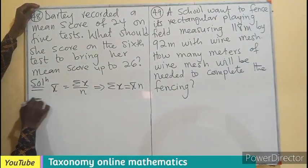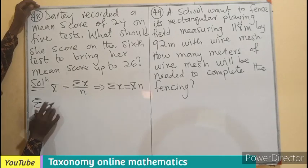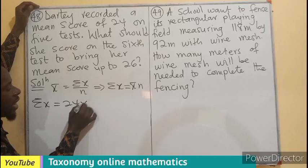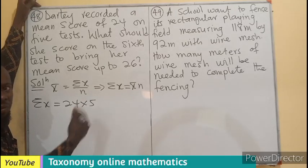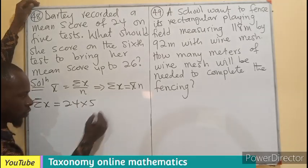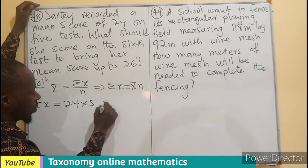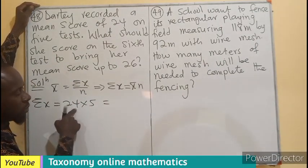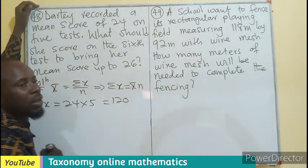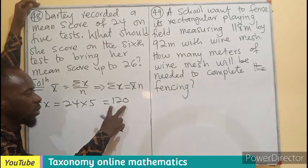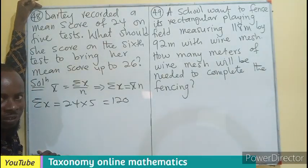So total number of exercises or tests added is going to be the mean, which is 24 times 5, which is the number of tests that have been added. So this will be 100 and this will be 40, so this will be 20, so 120. It means that all the five tests, if added, will give us 120.